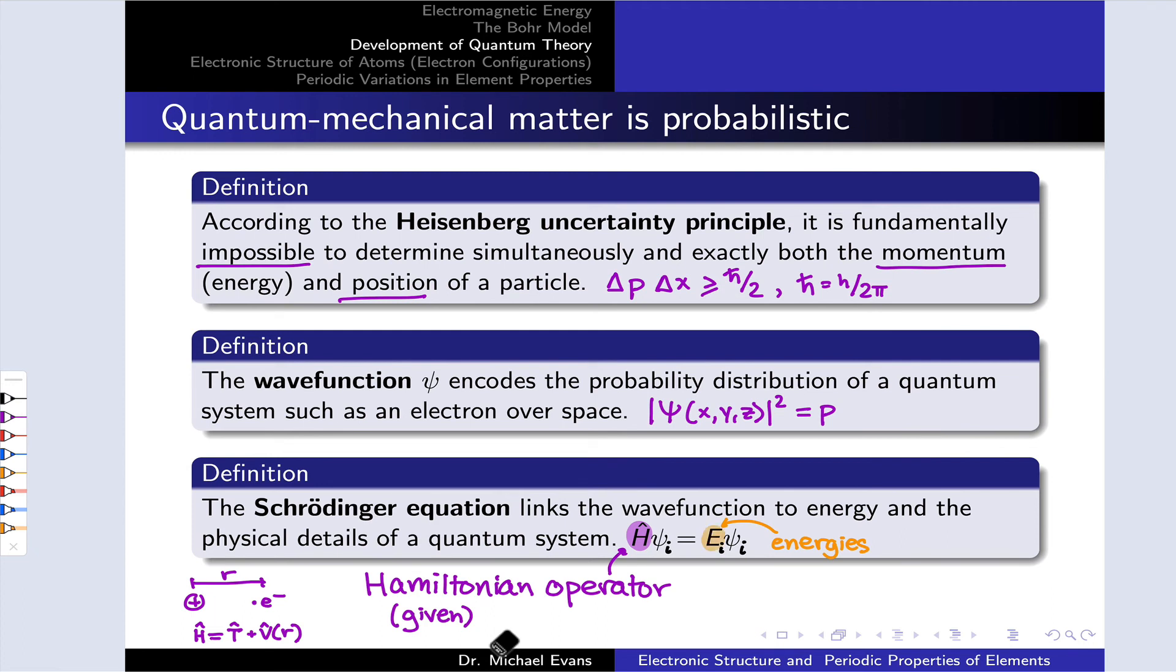and the wave functions themselves, the psi values. The energies and wave functions taken together describe the stability in the sense of the energy and the spatial positions in the sense of the wave functions of the electron. They're collectively called orbitals.